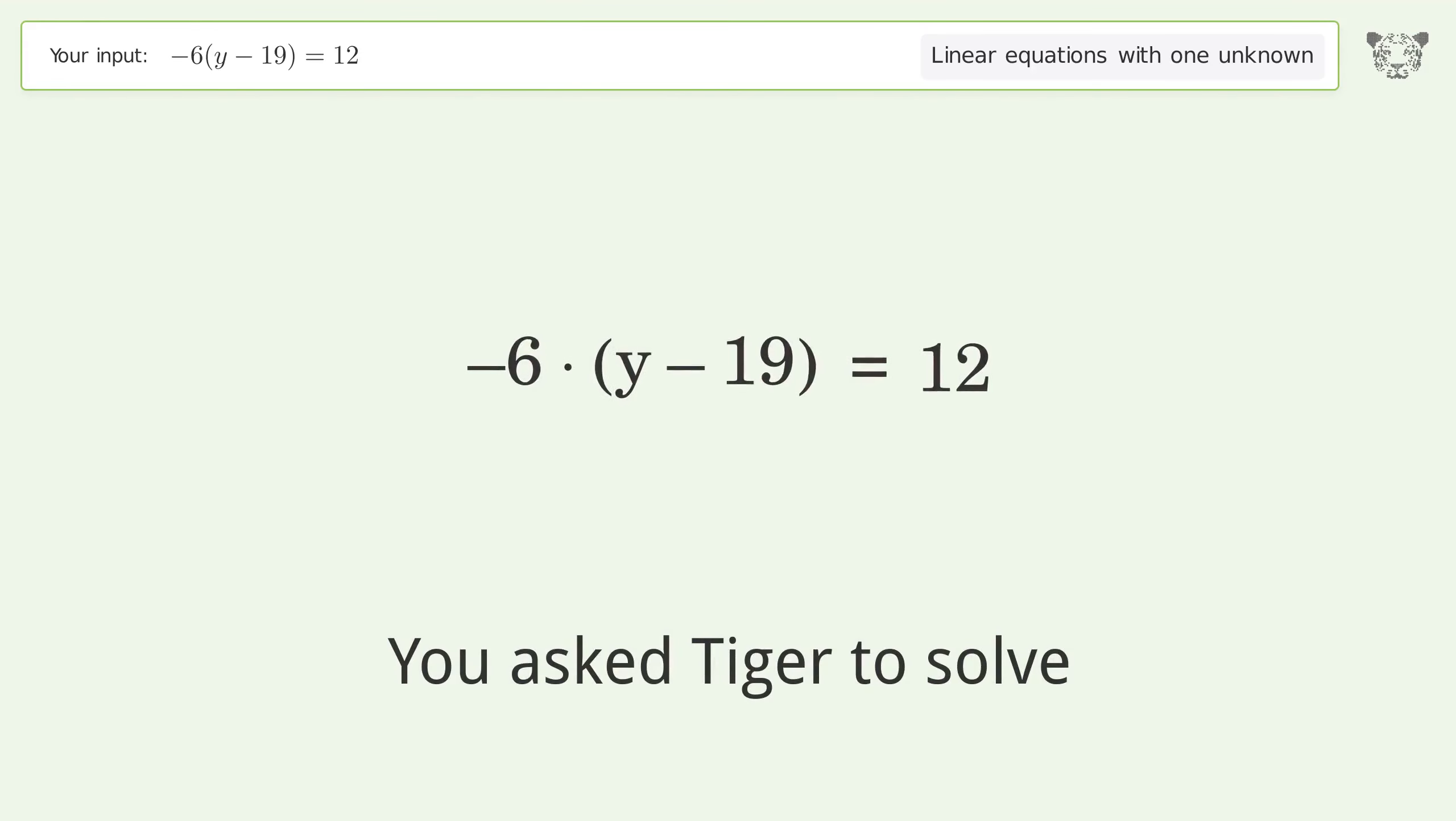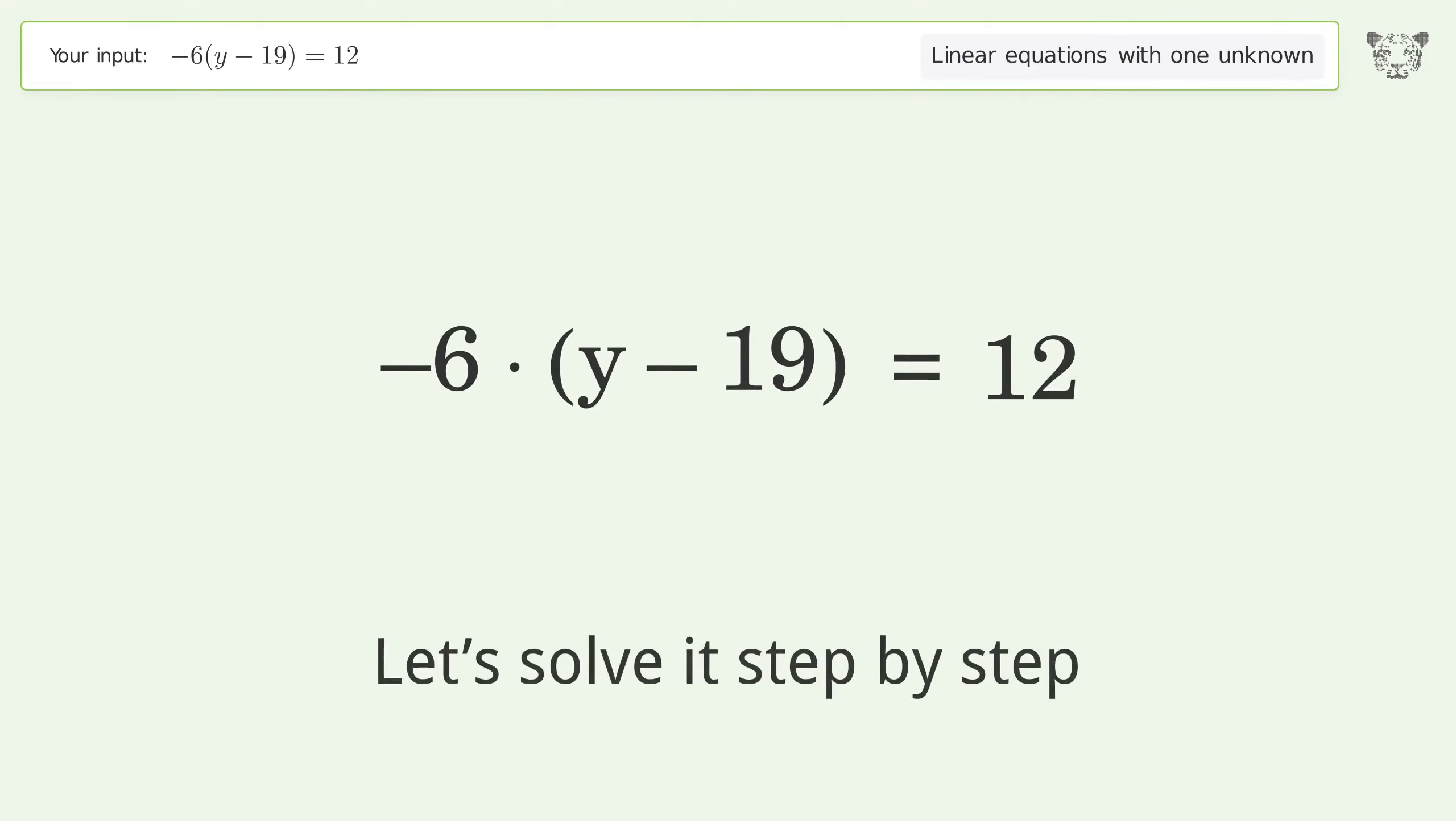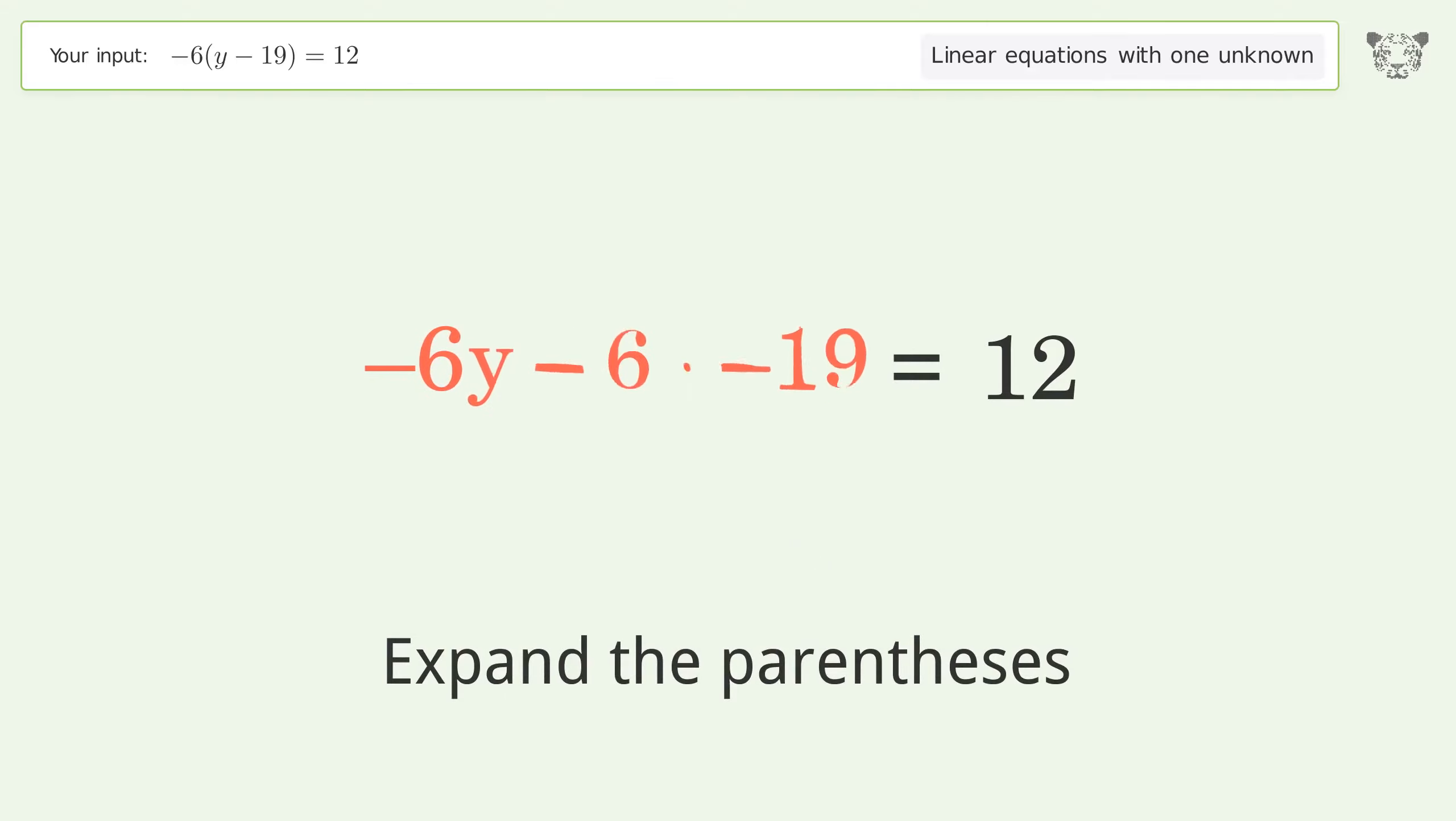You asked Tiger to solve this. This deals with linear equations with one unknown. The final result is y equals 17. Let's solve it step by step. Simplify the expression, expand the parentheses, simplify the arithmetic.